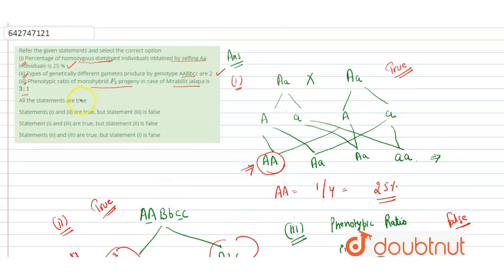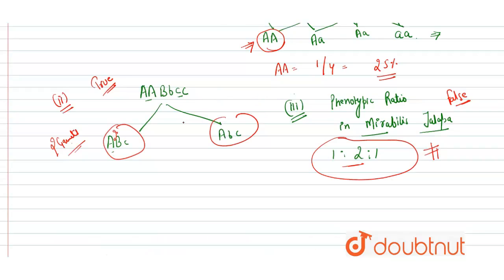So the third statement is false. Statements one and two are true, but statement three is false. Therefore, our final answer is option B, where statements one and two are correct while the third statement is false. Hope you understood it, thank you.